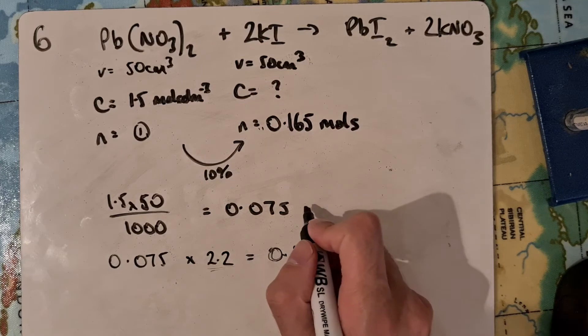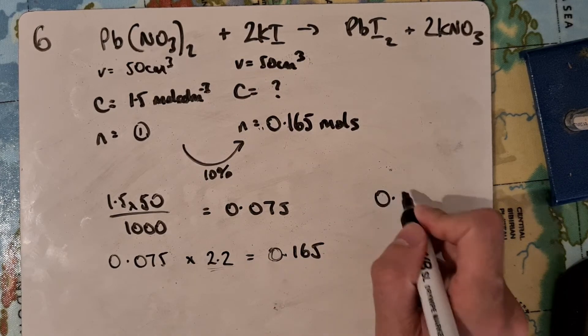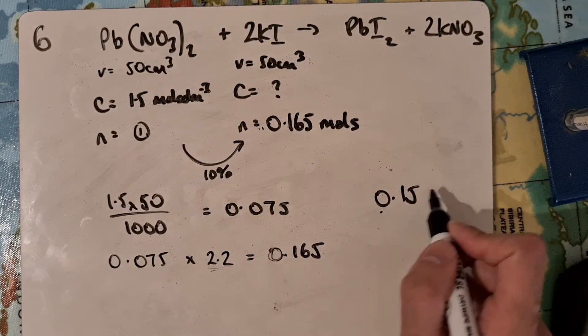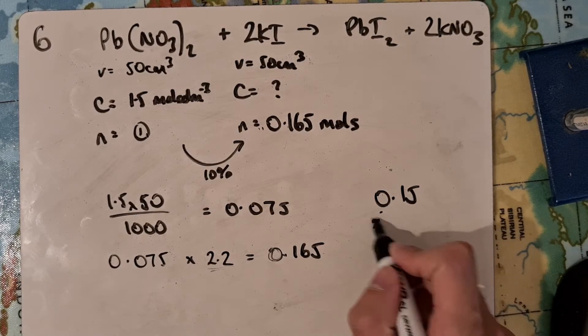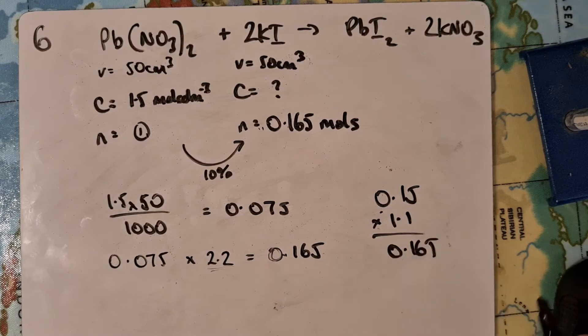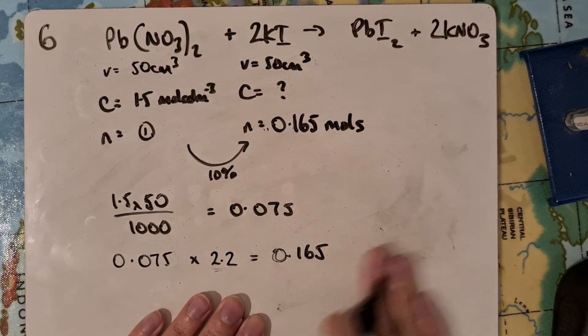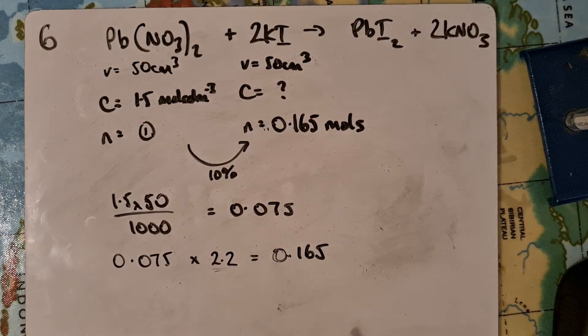You could have doubled it first and that would have given you 0.15, and then added on 10% of that. So 0.15 times 1.1 would also be 0.165. There's a few ways to get there. I've done it all in one step with this calculation.